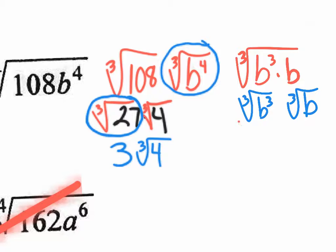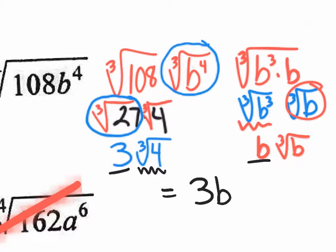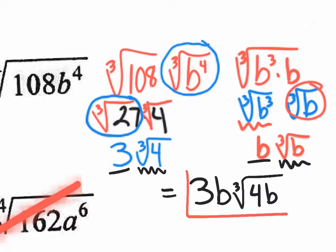The cube root of b³ is just b, and this remaining one stays as the cube root of b. Now I put both parts of the answer together, organized. The final answer is 3b times the cube root of 4b — that is the final answer for number 2.